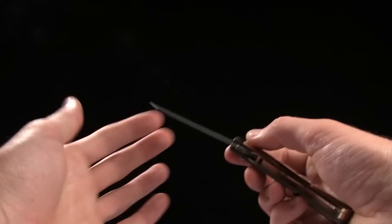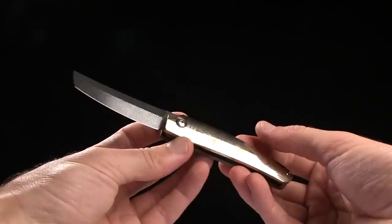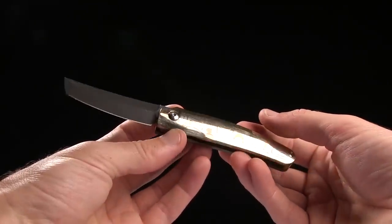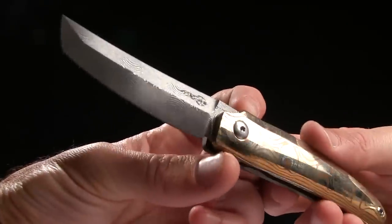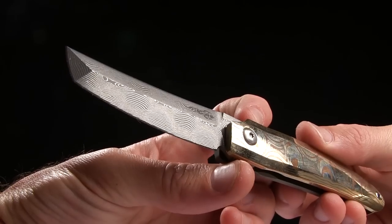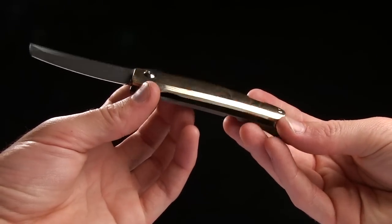We also have several other options as well. We have this one, which is the regular old Damascus. I say regular and old, but it is anything but. It is absolutely gorgeous, as well as the Mokutai handles.